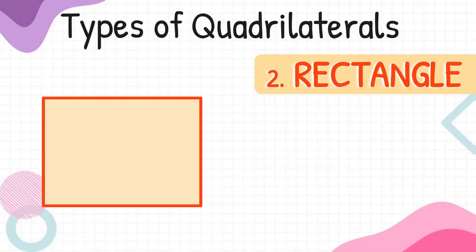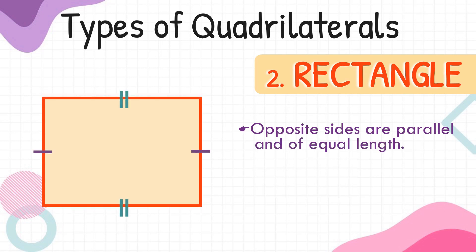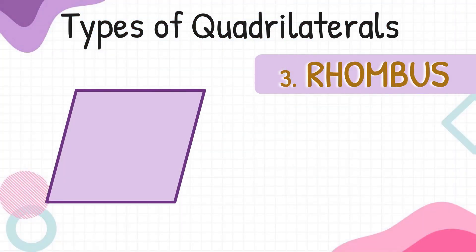The next type of quadrilateral is a rectangle, where its opposite sides are parallel and of equal length. If the width of a rectangle measures 5 centimeters, then its opposite side also measures 5 centimeters. If the length is 9 centimeters, then its opposite side is also 9 centimeters. Just like the square, a rectangle also has four right angles, where each angle measures 90 degrees.